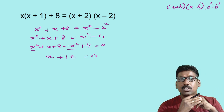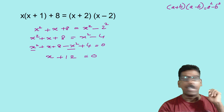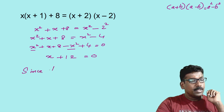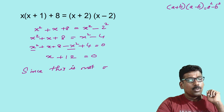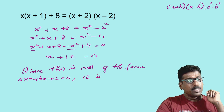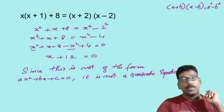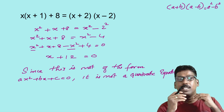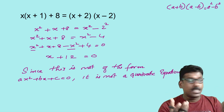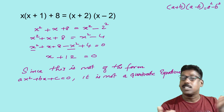Is this a quadratic equation? No, because this is not in the form ax squared plus bx plus c equals 0. So we can write the conclusion as: since this is not of the form ax squared plus bx plus c equals 0, it is not a quadratic equation. So if it is a quadratic equation, you can say: since this is of the form ax squared plus bx plus c equals 0, it is a quadratic equation.